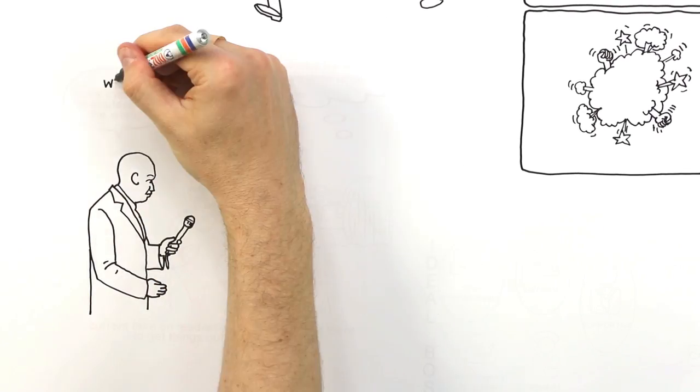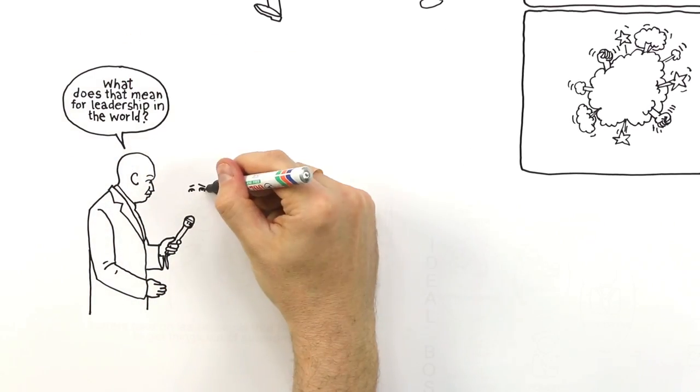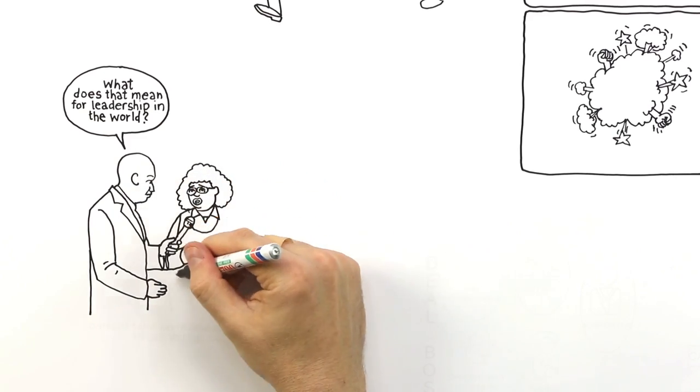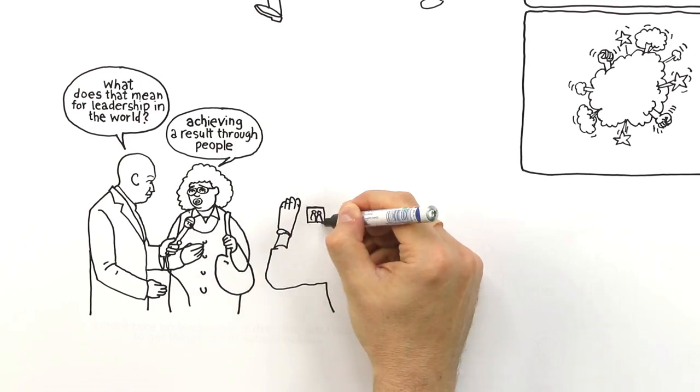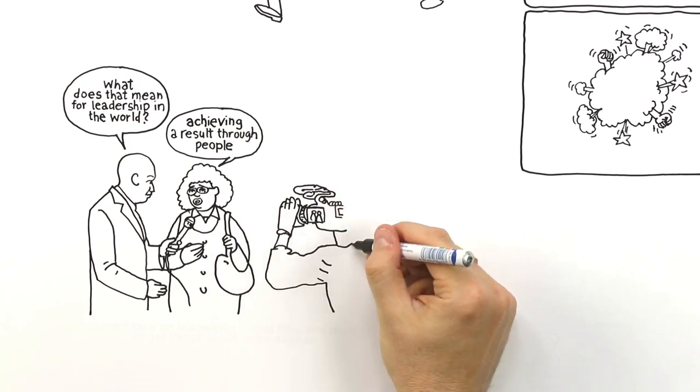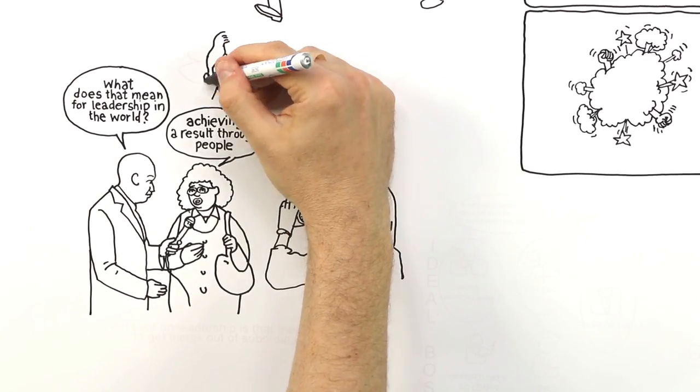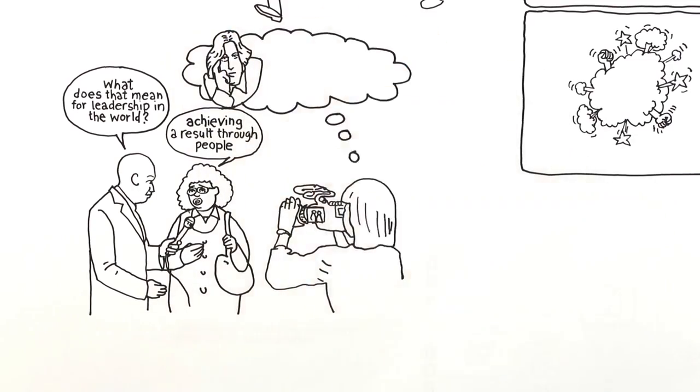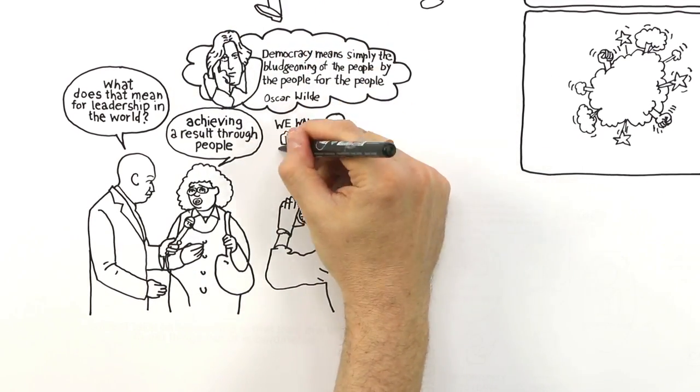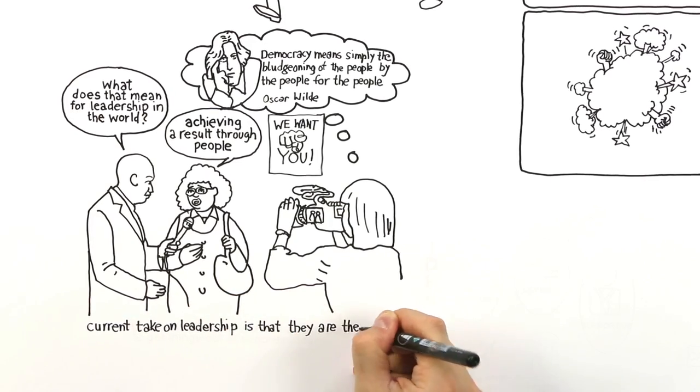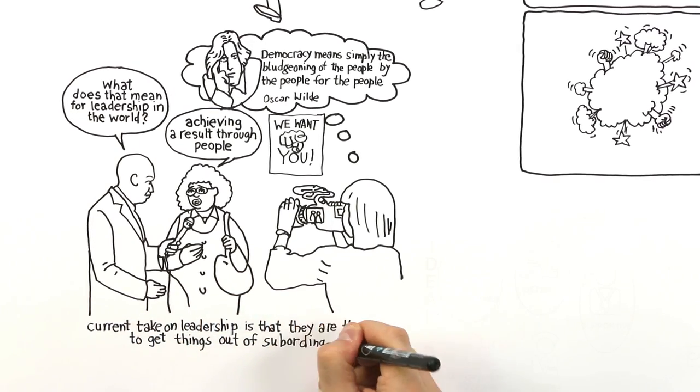When we ask people to define leadership, they normally say something consistent with the idea of achieving a result through people. The intent of that statement is clearly to take. The implication is that people are the means. Now if I'm using you as a means to achieve something from you, clearly I'm out to get something from you. So the current take on leadership is that they are there to get things out of subordinates.